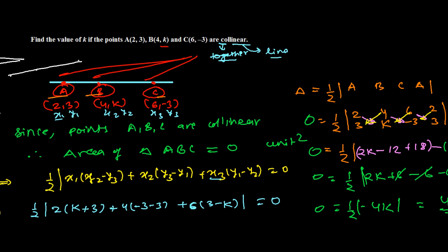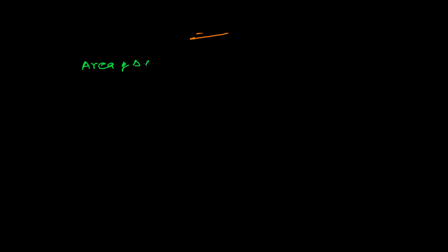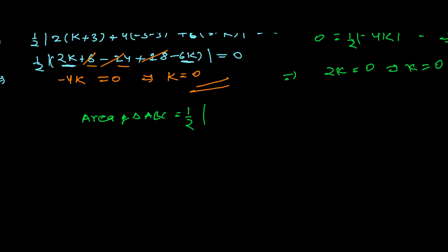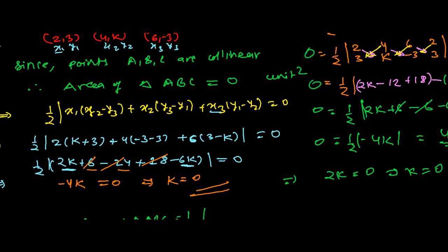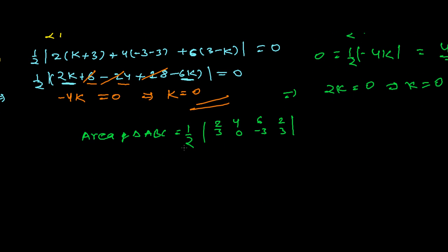Now the question may ask you to verify this. We said k = 0, but how can we be sure? If I substitute k = 0 back and get the area of the triangle as 0, then I can confirm the answer is correct. So I'll find the area of triangle ABC again using k = 0. Using the shortcut method, the vertices are (2,3), (4,0), (6,−3), and repeat (2,3).